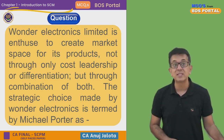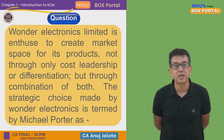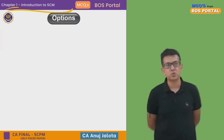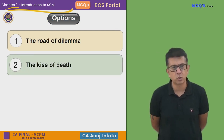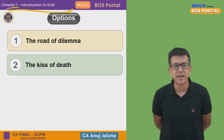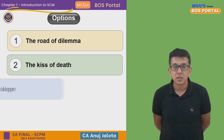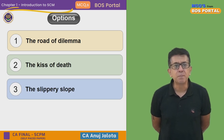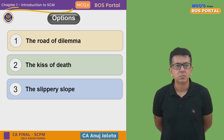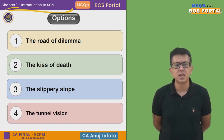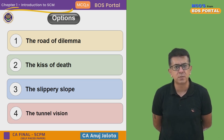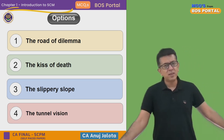The four options are: first, 'Road of Dilemma' — you are not sure what you want to do; second, 'Kiss of Death' — this is a dead end, it will not work, you are trying to do a suicide mission; third, 'Slippery Slope' — a slightly risky thing; and fourth, 'Tunnel Vision' — you are trying to do something for the long run that only you can see but others cannot.